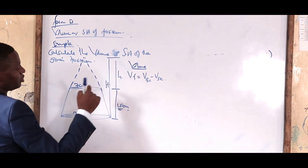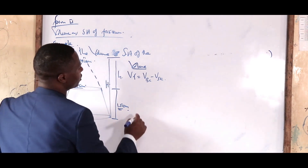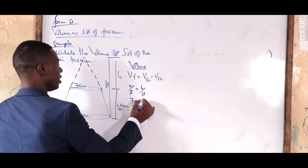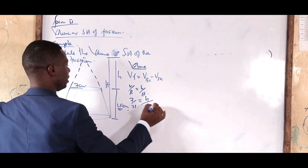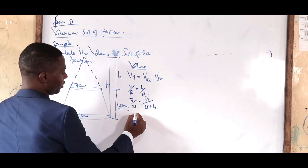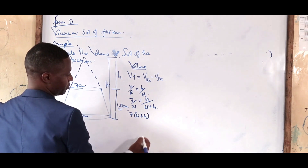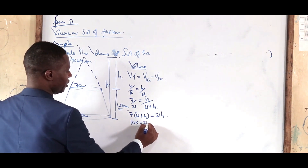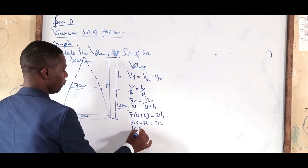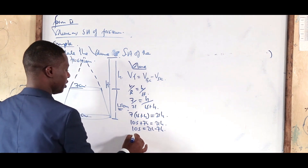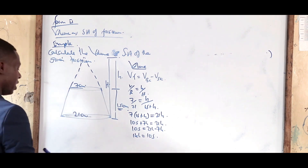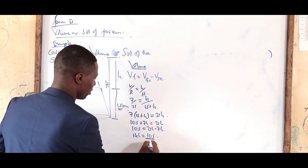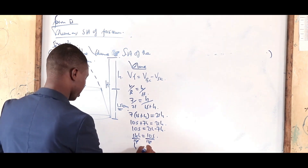We start by finding small H and capital H, because without that we cannot get the volume. We use the ratio: r over R equals H over H, meaning 7 over 21 equals H over (15 + H). Cross-multiplying gives 7(15 + H) = 21H, so 105 + 7H = 21H, therefore 105 = 14H, giving H = 7.5 cm.